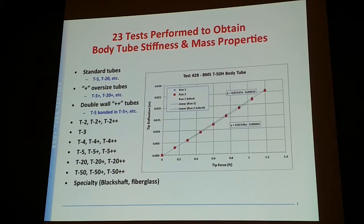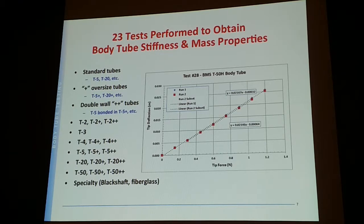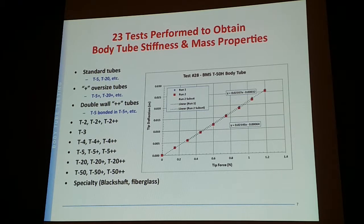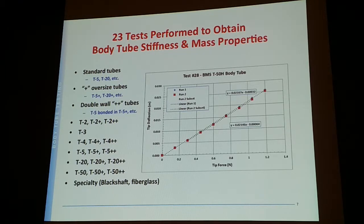To support the program, you need to know how heavy and how stiff the tube is — the latter is not published data. So I went through a long set of tube testing covering 23 different configurations, focused primarily on paper tubes, with some additional work on blackjack tubing and one test on a fiberglass tube. Fiberglass tubes run into the gray area of what's allowed in super rock, so this project really focused on standard paper tubes.